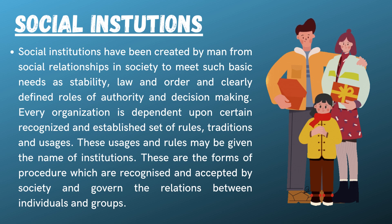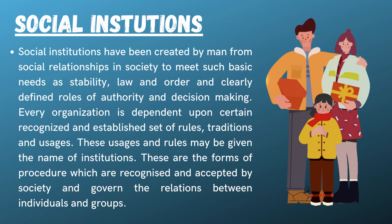Social institutions have been created by man from social relationships in society to meet such basic needs as stability, law and order, and clearly defined roles of authority and decision making. Every organization is dependent upon certain recognized and established set of rules, traditions and usages. These usages and rules may be given the name of institutions. These are the forms of procedure which are recognized and accepted by society and govern the relations between individuals and groups.